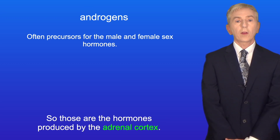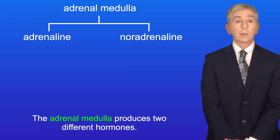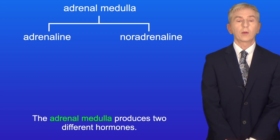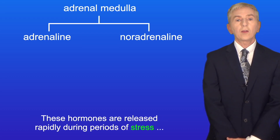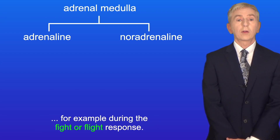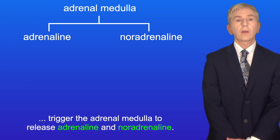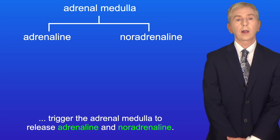Those are the hormones produced by the adrenal cortex. The adrenal medulla produces two different hormones. These hormones are released rapidly during periods of stress, for example during the fight or flight response. In this case, signals from the sympathetic nervous system trigger the adrenal medulla to release adrenaline and noradrenaline.